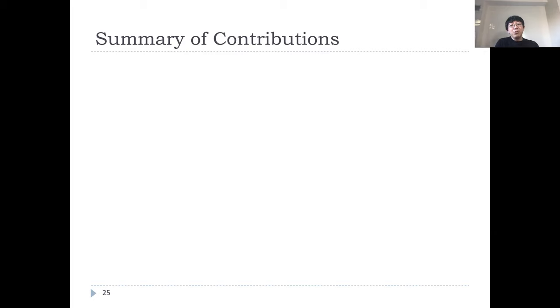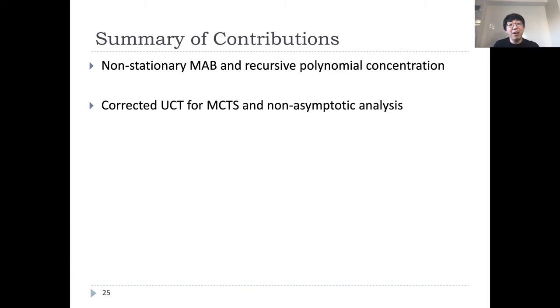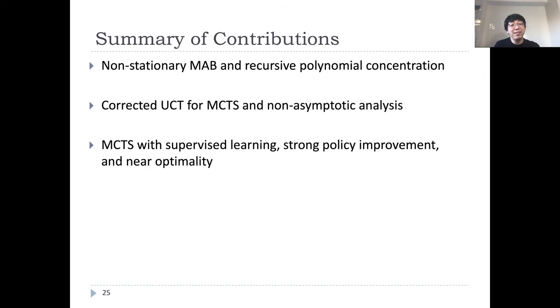Let's summarize our contributions of this work. To show the convergence property of MCTS, we define suitable non-stationary MAB and show that the recursive polynomial concentration in the simulation tree indeed holds. This leads to a corrected upper confidence tree algorithm with precise non-asymptotic analysis for the query node. Next, by combining with supervised learning, we show that this overall approach, which has enjoyed great empirical performance, indeed succeeds in learning the optimal value function. Finally, as in successful practical applications, our theoretical result argues that a polynomial bonus instead of the logarithmic one should be used.